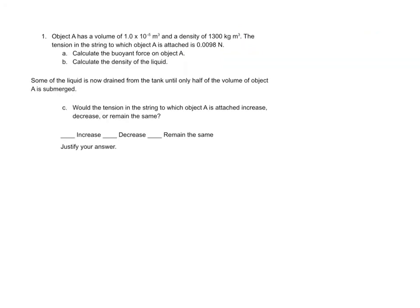Alright, here's our first free response problem. It says that object A has a volume of 1 times 10 to the negative 5th meters cubed and a density of 1300 kilograms per meter cubed. The tension in the string to which object A is attached is 0.0098 newtons. Calculate the buoyant force on the object. So we'll start with that. We're going to start by drawing a force diagram and writing a net force statement. So we should have a tension pointing up, a buoyant force pointing up, and mg or the weight pointing down.